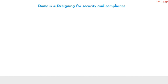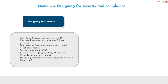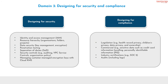Domain 3: designing for security and compliance. Number 1, designing for security. It contains: first, identity and access management; second, resource hierarchy — organizations, folders, projects; third, data security, key management, encryption; fourth, penetration testing; fifth, separation of duties; sixth, security controls such as auditing, VPC service controls, organization policy; seventh, managing customer-managed encryption keys with Cloud KMS. Number 2, designing for compliance. It contains: first, legislation such as health record privacy, children's privacy, data privacy and ownership; second, commercial — sensitive data such as credit card information handling and personally identifiable information; third, industry certifications such as SOC2; fourth, audits including logs.